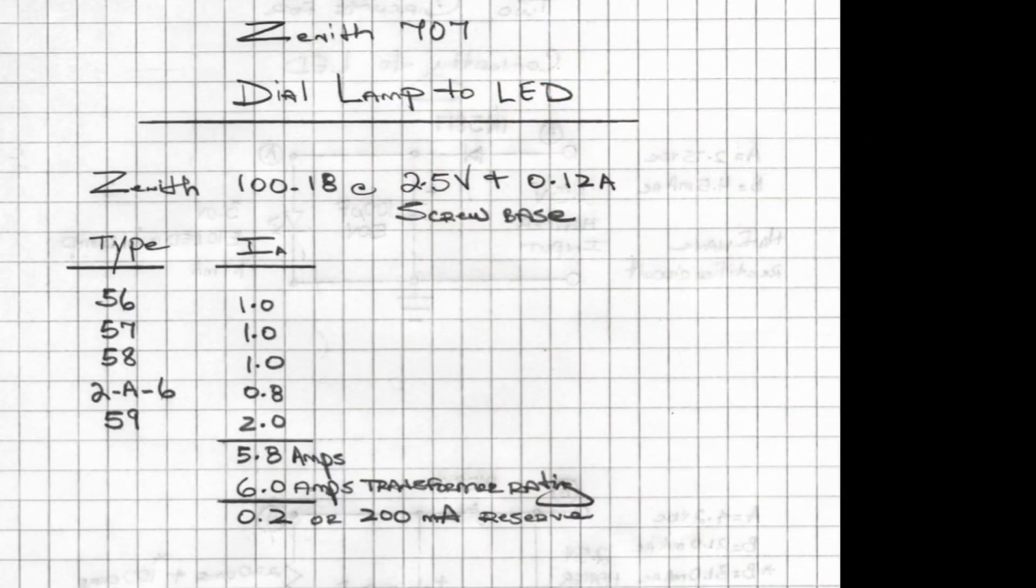Hey folks, thanks for joining me. I wanted to share some of my shop notes and drawings from the Zenith 707, where I converted the dial lamp from AC voltage to an LED. The Zenith 100-18 lamp...